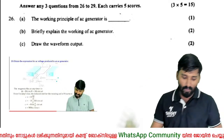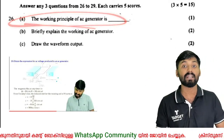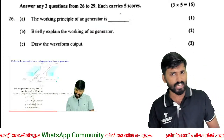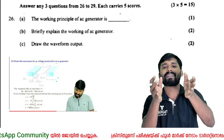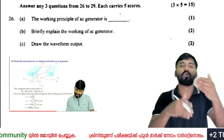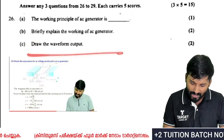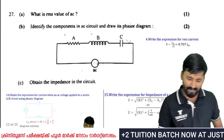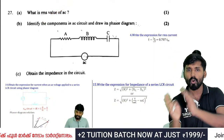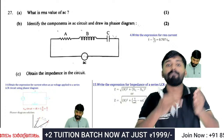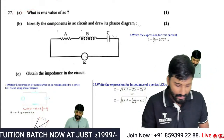Explain the working principle of an AC generator. The working is based on electromagnetic induction — the armature rotates in a magnetic field, inducing an EMF. Also, the RMS value of AC is the root mean square value — the square root of the mean of the squares of the different values of voltage or current.